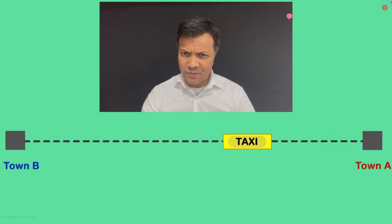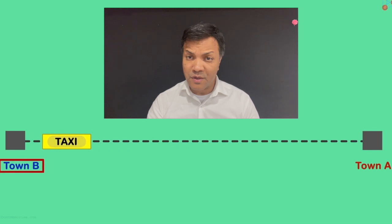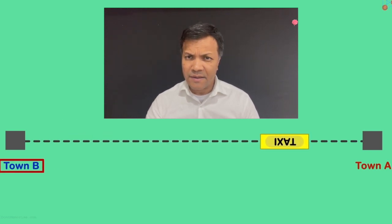Today our topic is distance and displacement, speed and velocity — how distance connects with speed and how velocity connects with displacement. Let's start with two simple questions. First, what would be the distance and displacement when this taxi moves from town A to town B? Second, what would be the distance and displacement when this taxi moves from town A to town B and returns to town A? Pause the video and answer before continuing.